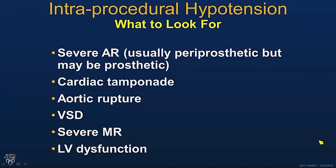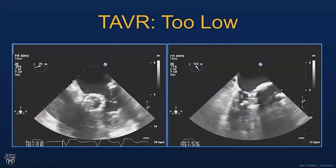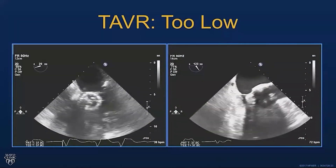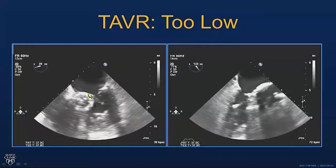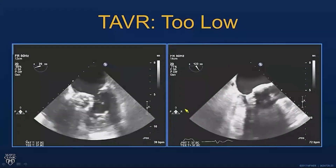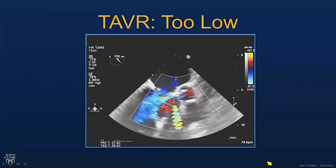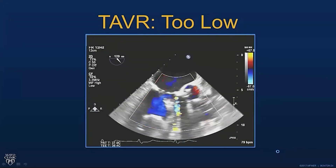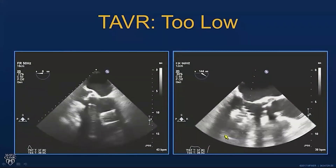If there is procedural hypotension, we look for severe AR, tamponade, aortic annular rupture, a VSD that was caused, new valve disease such as severe MR or TR, or LV dysfunction. Here's an early case where we didn't place the valve in a good position — it's too low. In the long axis view, it's interfering with the mitral apparatus, and there's quite a bit of both prosthetic and periprosthetic regurgitation. The valve is in the ventricle. Fortunately, they were able to retrieve it.